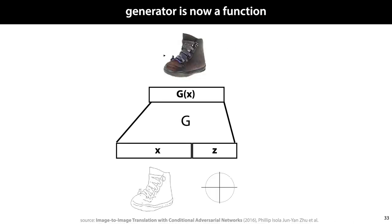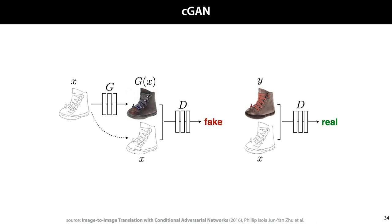In a conditional GAN, the generator is a function with an image input which it maps to an image output. However, it uses randomness to help it imagine specific details in the output, and this randomness is part of its input. Running this generator twice but with a newly sampled random vector z would result in a different shoe that is also a correct instantiation of the input line drawing. The discriminator of the conditional GAN takes a pair of an input and an output. If these come from the generator, they should be classified as fake (i.e. negative), and if they come from the data, they should be classified as real, or positive.